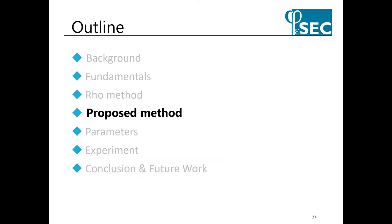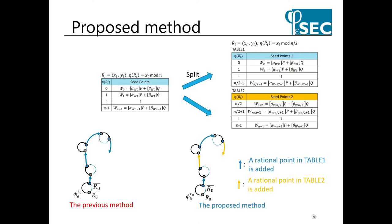Next is the proposed method. The previous method is shown on the left and the proposed method is shown on the right. The problem with the previous method was that the same seed points were added twice in a row. Therefore, as the proposed method, we divide the table of seed points into two and refer to them alternately. Since the proposed method can prevent the same seed points from being added continuously, it leads to a reduction of fruitless cycles. We need to make sure that the table does not contain the same seed points. The previous method requires two steps for a fruitless cycle to result. The proposed method requires four steps, so the conditions to result in a fruitless cycle become stricter and fruitless cycles can be eliminated.